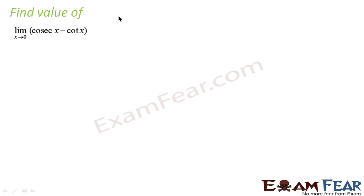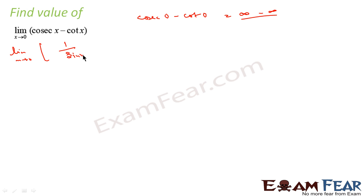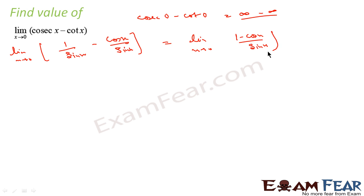Now find the value of (cosecx − cotx) where x tends to 0. Putting x=0 gives ∞ − ∞, which is not a correct form, so we have to rewrite this. We write cosecx as 1/sinx and cotx as cosx/sinx. Now this becomes (1 − cosx)/sinx. Since we only know the formula for sinx/x, we divide the whole thing by x.